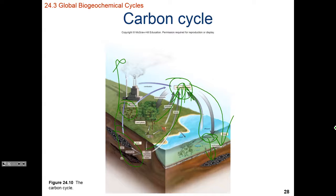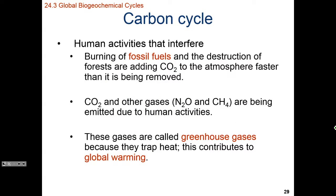That bicarbonate can also turn back into CO2 and exit the ocean — it can bubble out. We can also remove CO2 from the atmosphere through photosynthesis, which is how most CO2 is removed. If we take a living organism and bury it, the carbon dioxide in it gets stuck underground. We as human beings have also been adding lots of reserve CO2 to the atmosphere by burning fossil fuels, and there are other gases such as N2O and CH4 being emitted due to human activities.